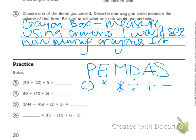For three, I see I have parentheses. So thirty plus forty is seventy, and then times five. Zero times five is zero. Five times seven is thirty-five. So my answer is three hundred and fifty.